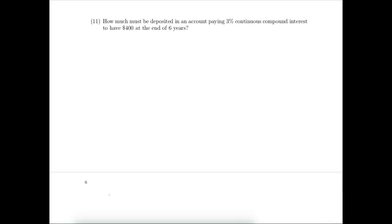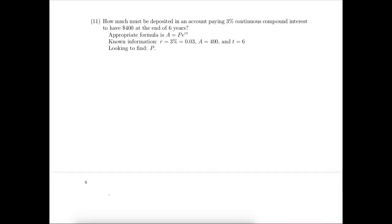Our next problem is again a continuous compound interest problem. Because it's compounded continuously, we'll use the continuous compound interest formula. The rate is 3%, the future value is going to be $400, and the time is going to be 6 years. We need to know how much the present value is — how much do we need to deposit now to end up with that $400. P is being multiplied by E to that particular power, so we'll just divide both sides by that amount. That's now a calculator problem.